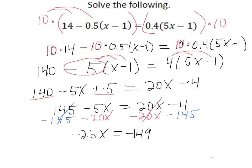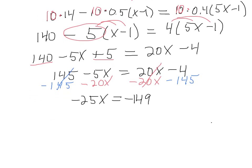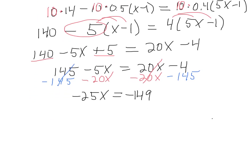So there's only one step left to do, and that is to divide by negative 25, and we have our final answer of x equals, the two negatives make a positive, 149 over 25.